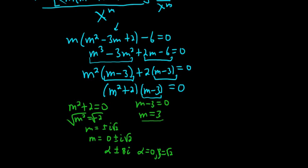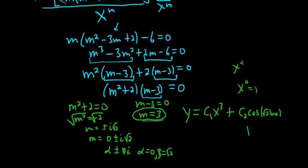So now we can use our formula. So this one is just going to give us C₁x³. And then these complex conjugates, they're going to give us plus x to the 0. So that's x to the α. So that's just 1. And then we'll have C₂cos(β ln x). So β is √2, and then ln x. Plus C₃sin(√2 ln x). And that is the final answer.